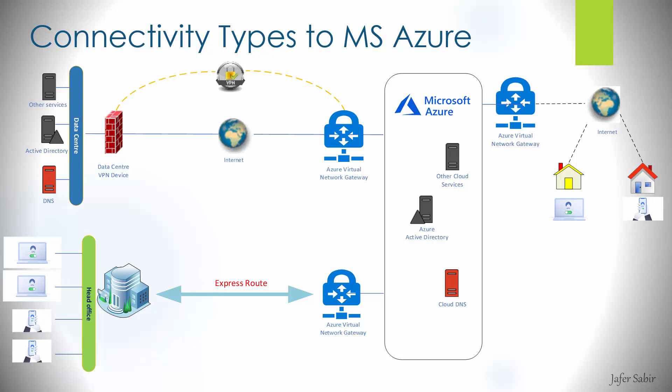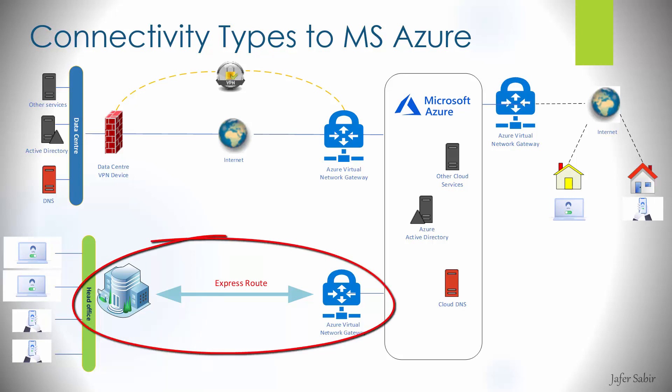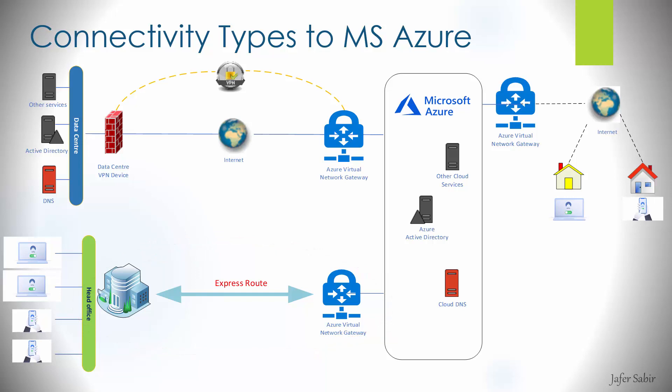ExpressRoute is used when you need stability and your internet-based VPN connection is not going to provide the speed and reliability you require. It's when you need a solid, reliable connection and high bandwidth — up to 100 gigabits per second. With this connection your ISP builds a tunnel to your vNet over their private network. As it's a dedicated private connection over the ISP's private network, the service is of course very costly compared to a VPN connection. In the image you can see the head office on the left, with the ExpressRoute built via the ISP connecting to the Azure Virtual Network Gateway — unlike the previous connections which ran over the public internet.